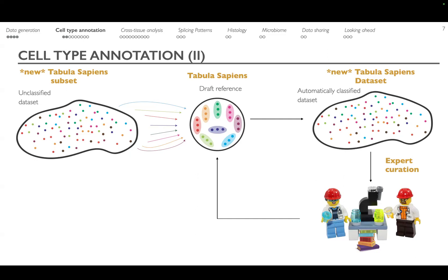We were searching through the literature and, as part of a consortium of roughly 150 people, there are always emerging computational methods. We worked on different computational strategies for annotating the data but realized there were advantages and disadvantages to all of them. So we decided to take a different approach and came up with the idea of building a 'popular vote.'